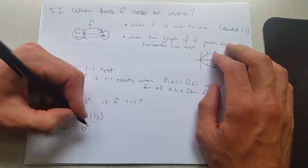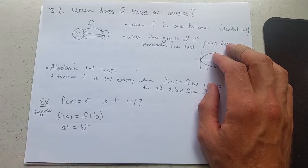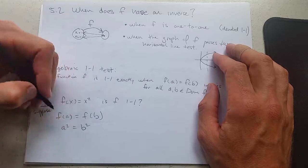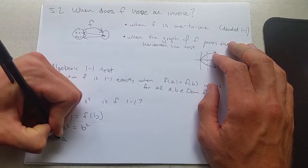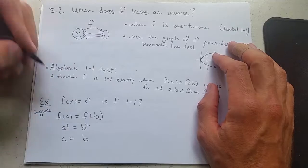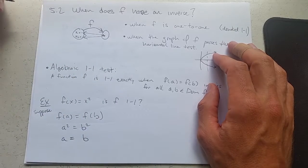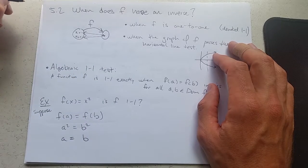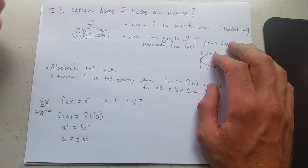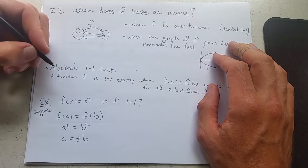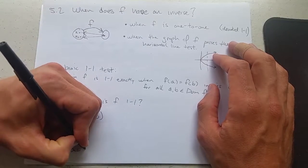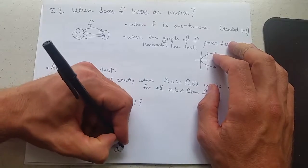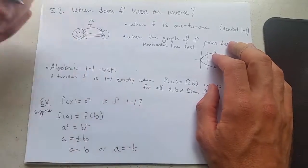It squares it. What does it do to b? It squares it. So if a squared equals b squared, now I can take the square root of both sides. It is true that one solution is a equals b, but a really equals plus or minus b. So a equals b or a equals negative b.